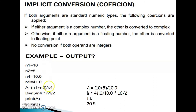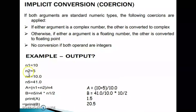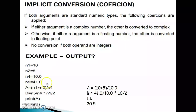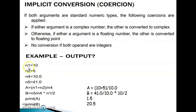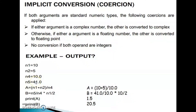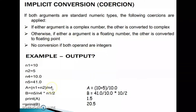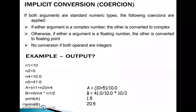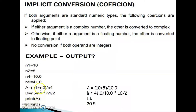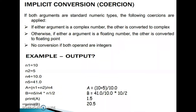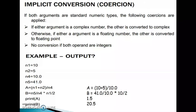For example, N1 equals 10, N2 equals 5 are integers, and N4 equals 10.0, N5 equals 21.0 are floating type numbers. When you combine integers and floats in an expression, the result will automatically be in floating type, because float is the largest type. Python automatically converts the integer type to float type.